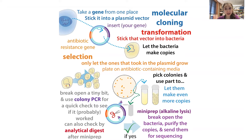First of all, let's clarify what we're talking about. I am not talking about making a bunch of copies of your dog. When we talk about molecular cloning, we're talking about taking a single piece of genetic information, like maybe the instructions for making a protein — the gene for making a protein. We're going to stick that somewhere that's easier to work with, typically a circular piece of DNA called a plasmid vector.